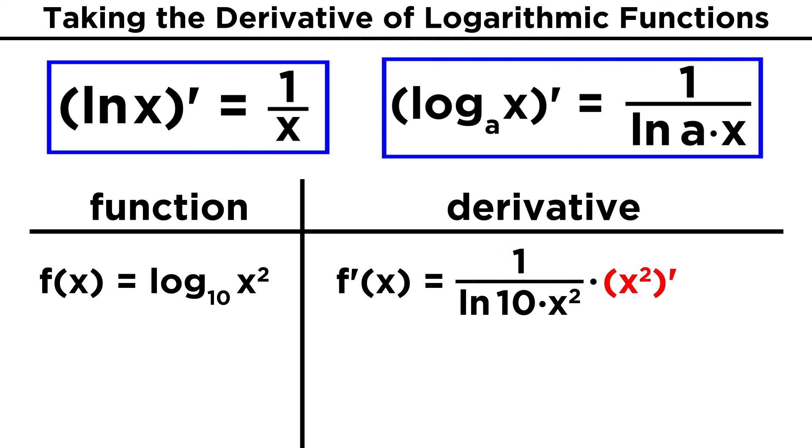Now we have to multiply this by the derivative of what was inside, and that will give us two X. So we get two X over the natural log of ten times X squared, which simplifies to two over the natural log of ten times X. This can certainly get more complicated, but our approach will always be the same, applying the chain rule in whatever manner necessary.